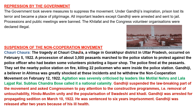The non-cooperation movement was suspended due to the Chauri Chaura incident. A village in Gorakhpur district, Uttar Pradesh, on February 5, 1922, a procession of about 3,000 peasants marched to the police station to protest against a police officer who had beaten some volunteers picketing a liquor shop. The police fired at the peasants, who became angry and set the nearby police station on fire, killing 22 policemen who were inside. Gandhiji, a believer in ahimsa, was greatly shocked and withdrew the non-cooperation movement on February 12, 1922.